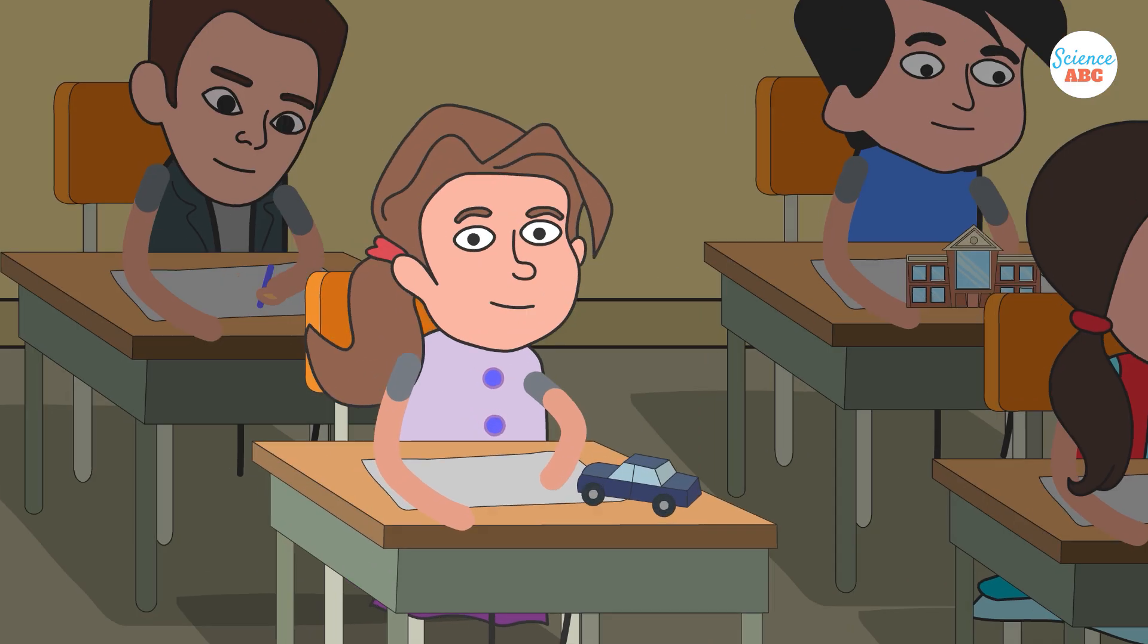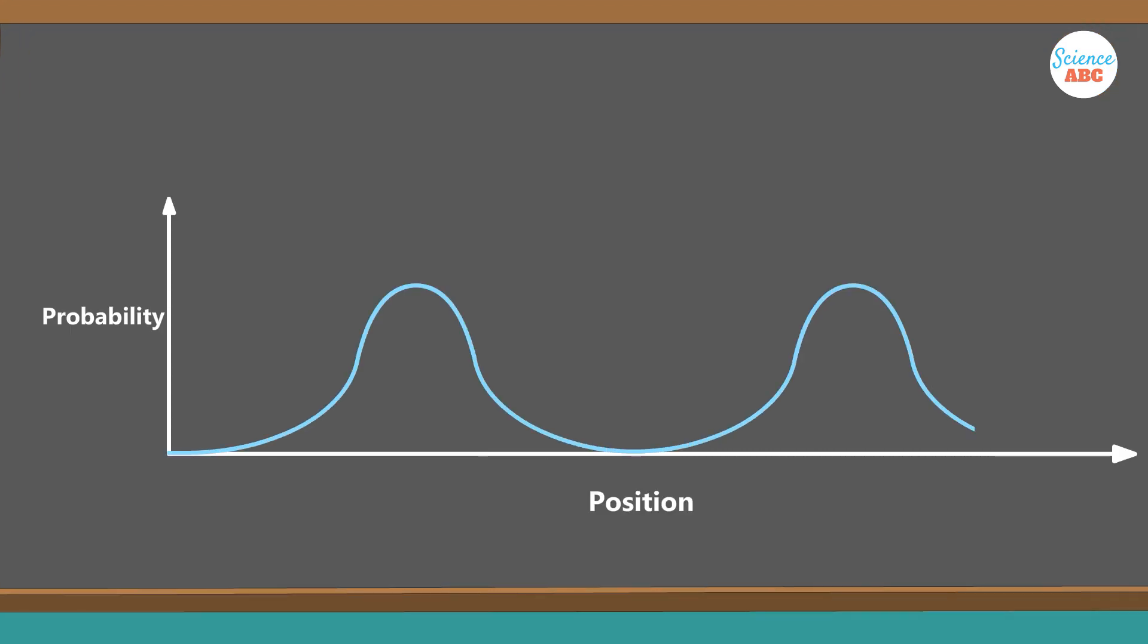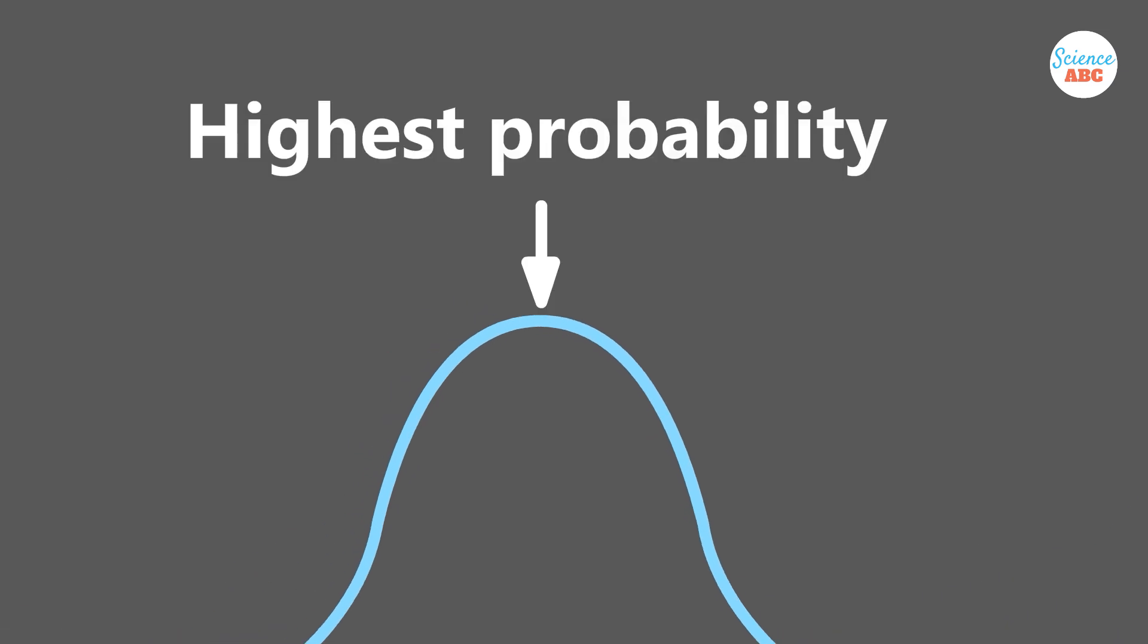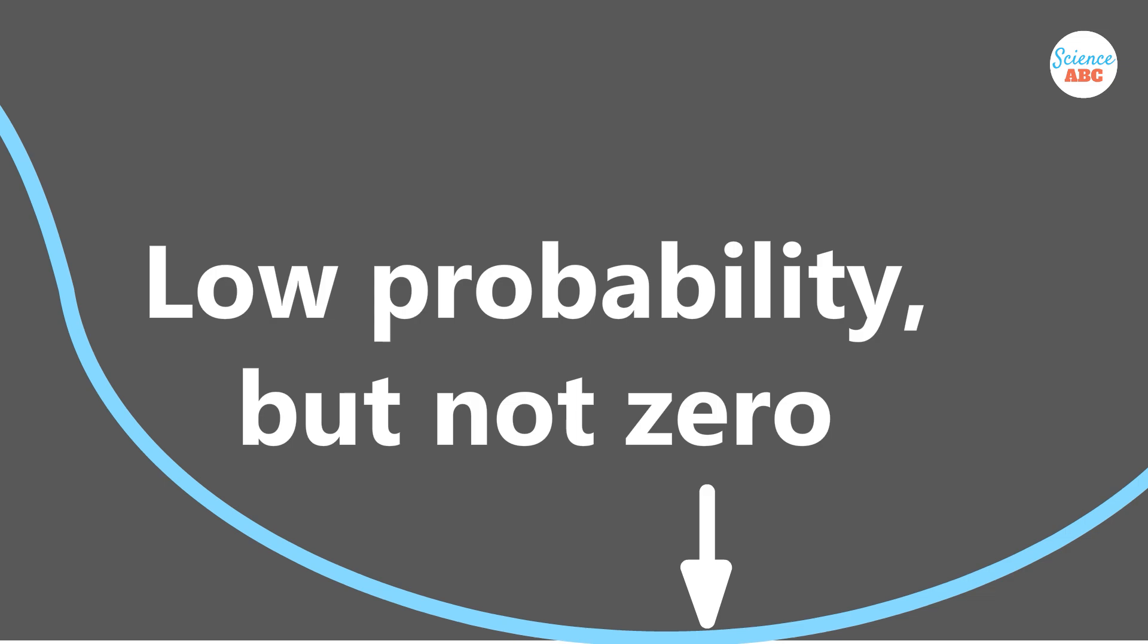It's important to note that this is all based on probabilities. For example, even though the probability of finding the electron at the crest of the wave is highest, it does not mean that the electron absolutely cannot be found at the trough. The probability of that is very low, but it's not zero.